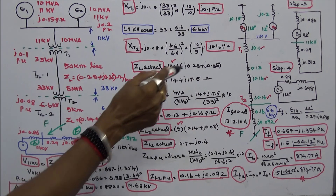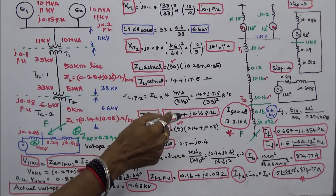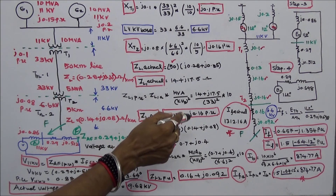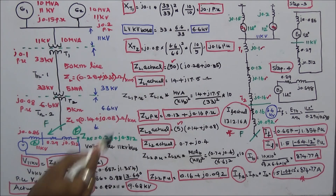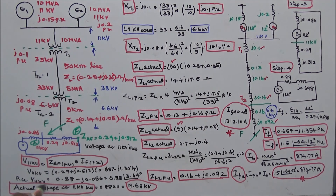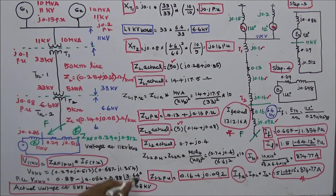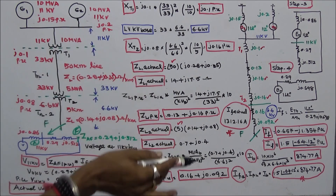To summarize: the actual fault current is 1312.16 A, and the actual voltage at the 11 kV bus during the fault is 9.68 kV. This is how we solve this type of symmetrical fault problem.